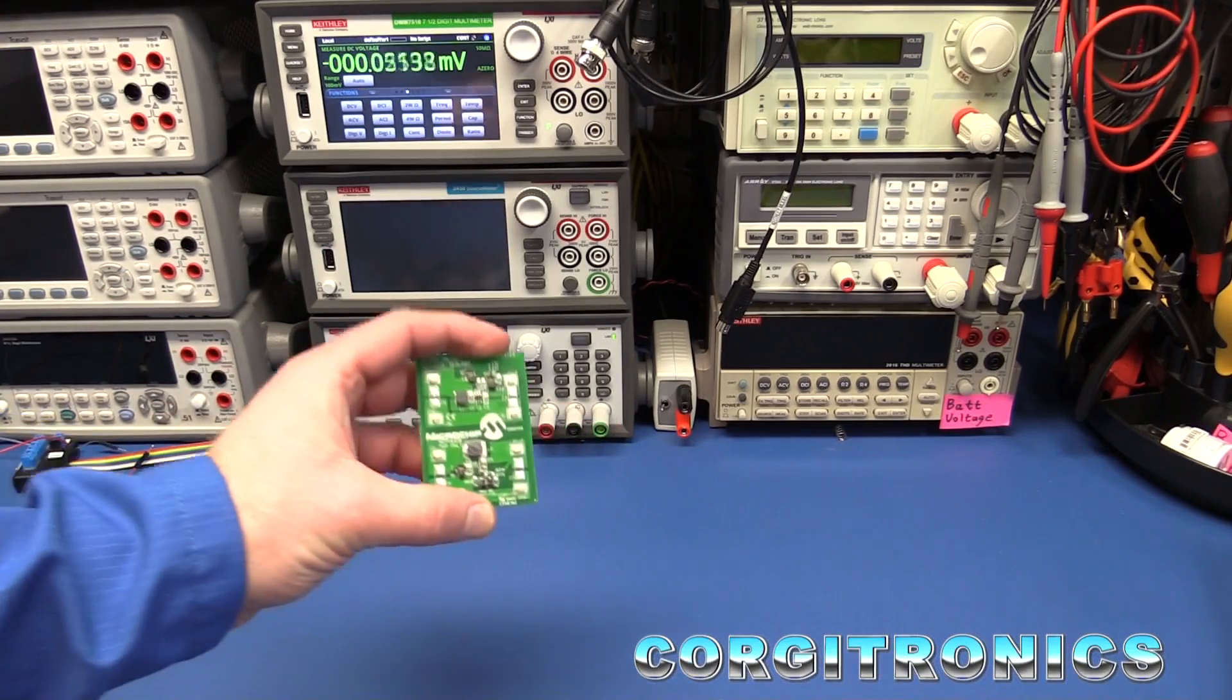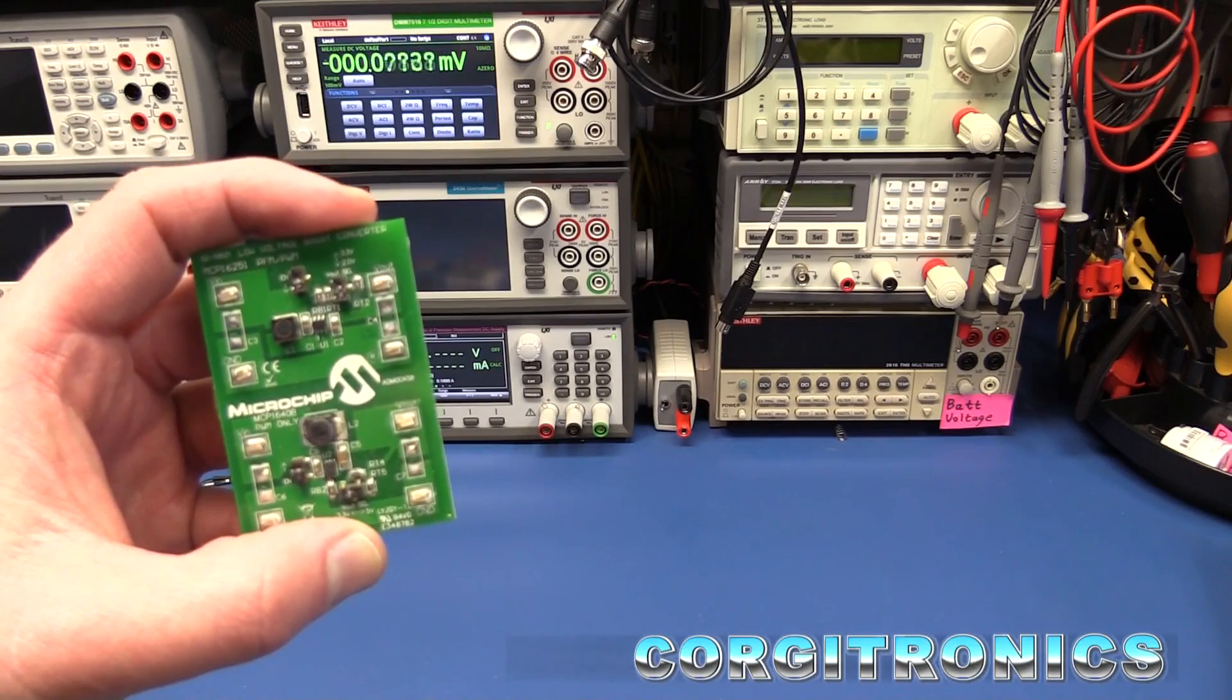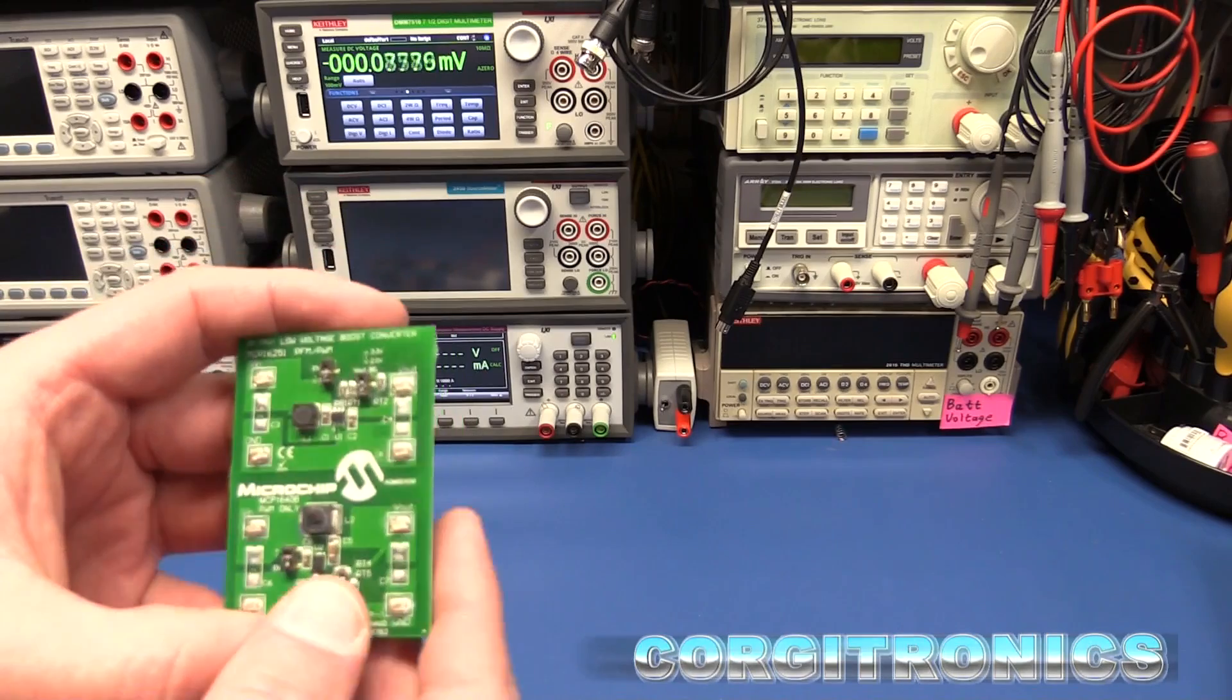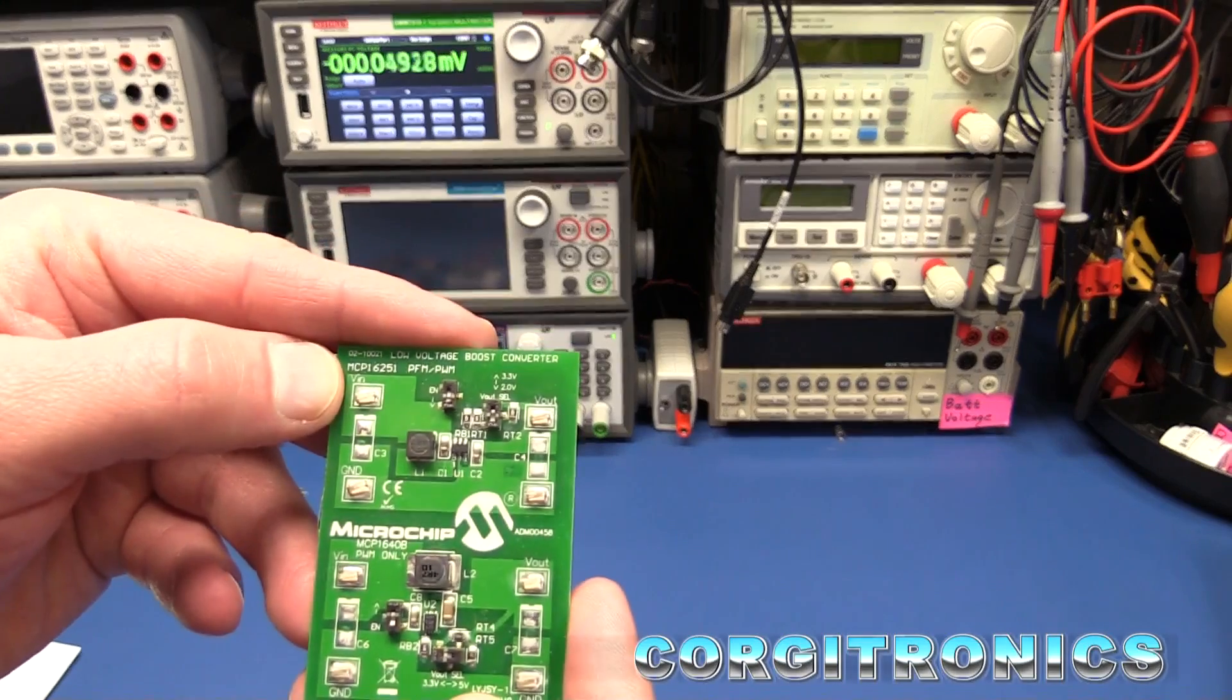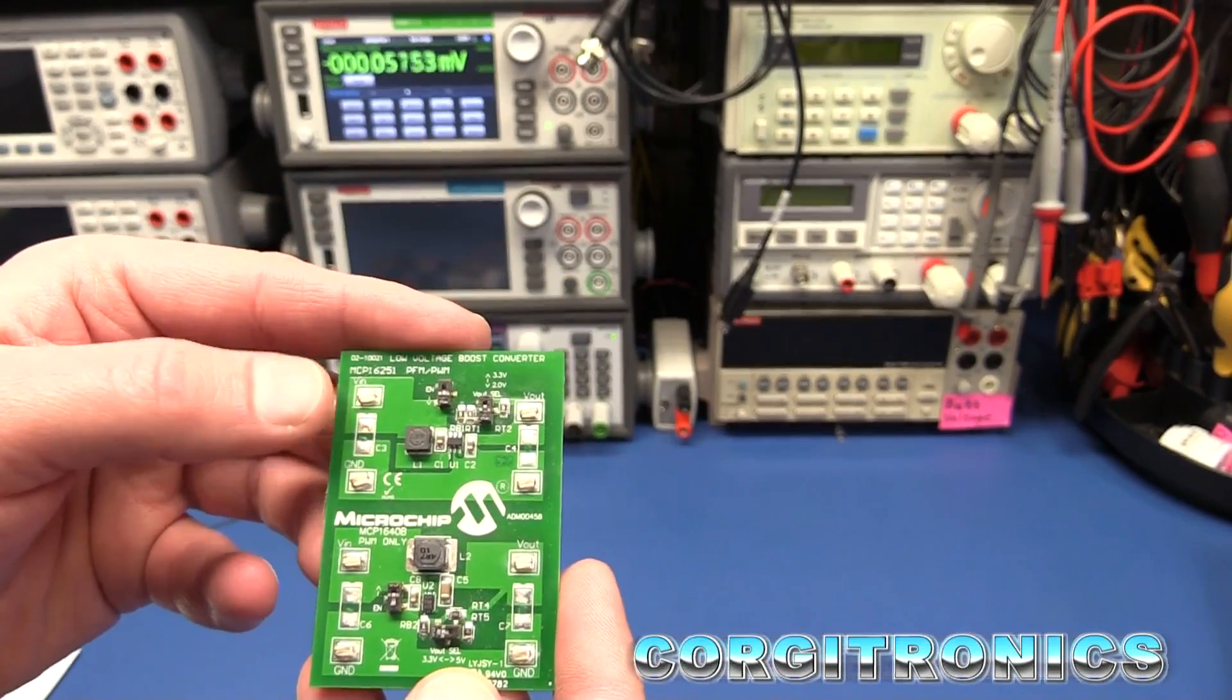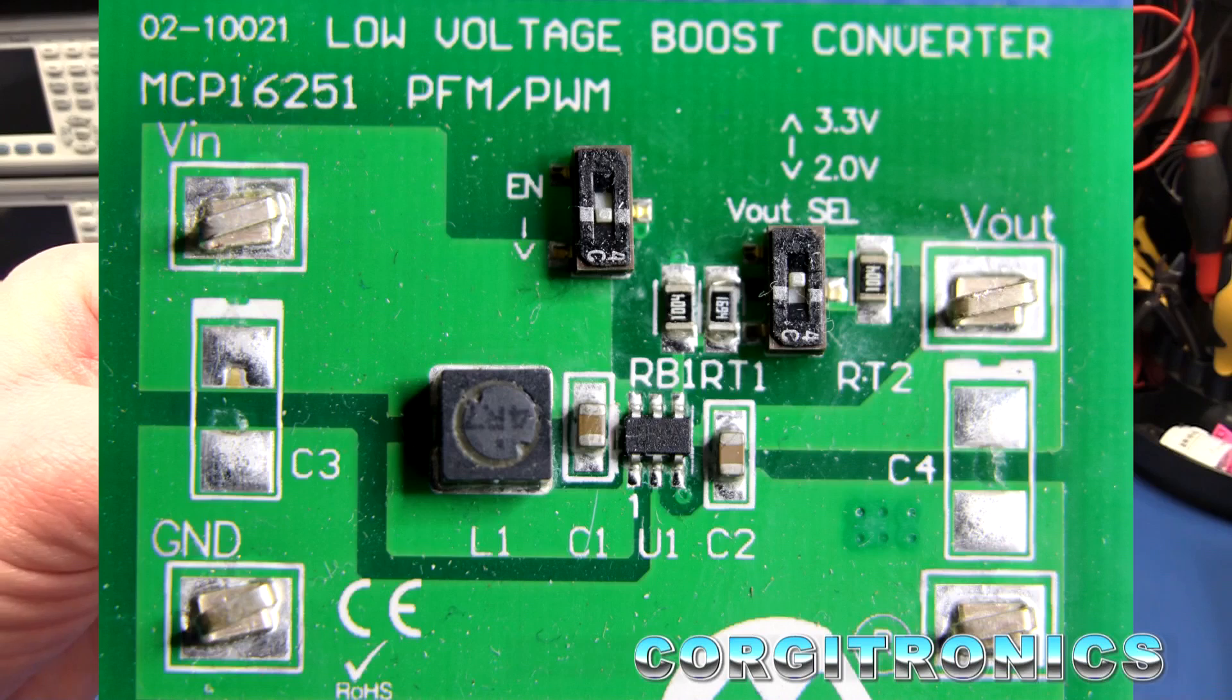Today we're going to take a look at the MCP16251 boost converter from Microchip. This is a little eval board that contains two different boost converters - the 16251 at the top and a 16408 at the bottom. We're going to use this 16251, and it's an inductor-based boost converter, not a capacitor one.